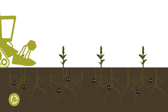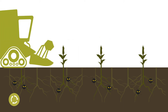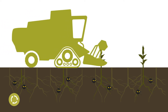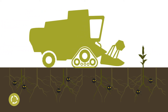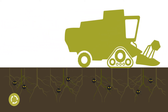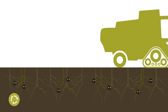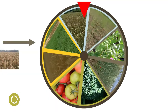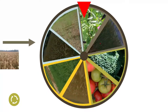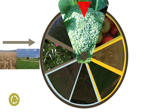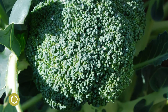A good crop rotation prevents pests and diseases reaching a population density in which they affect crop yield and quality, resulting in an economic loss for the farmer. It increases or preserves soil health and thus helps to maintain the profitability of the crop.